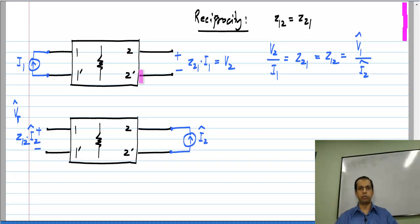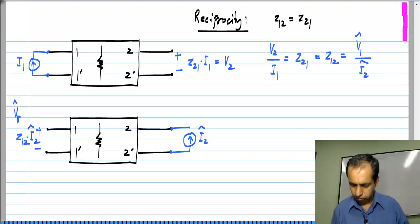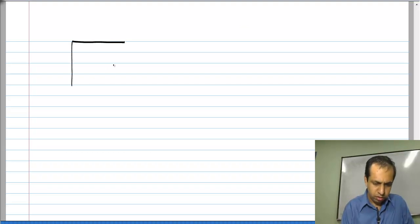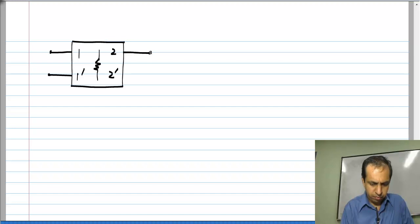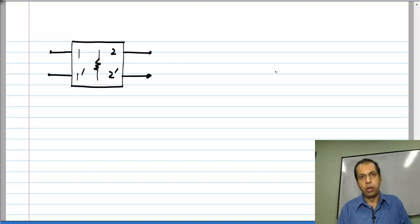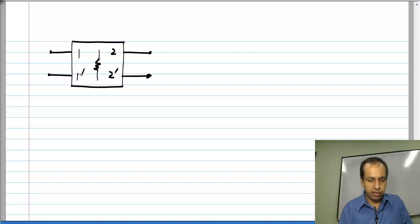This is how I will go about proving reciprocity for four-terminal two-ports: I will use the results I already know from three-terminal two-ports. Since I already have the proof for three-terminal two-ports — that is, two-ports in which there is a terminal common to the two ports — I will also try to define this network in the same way.